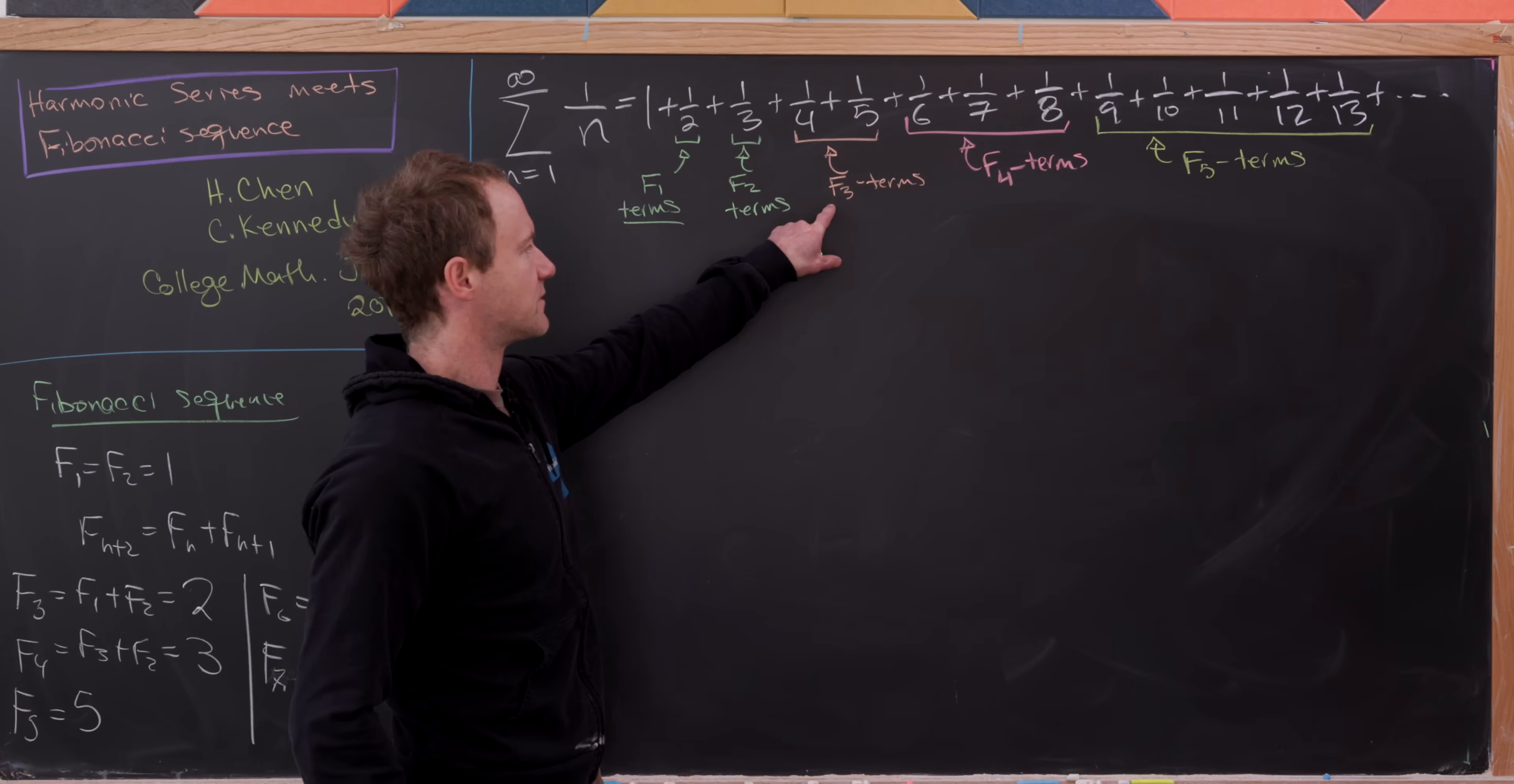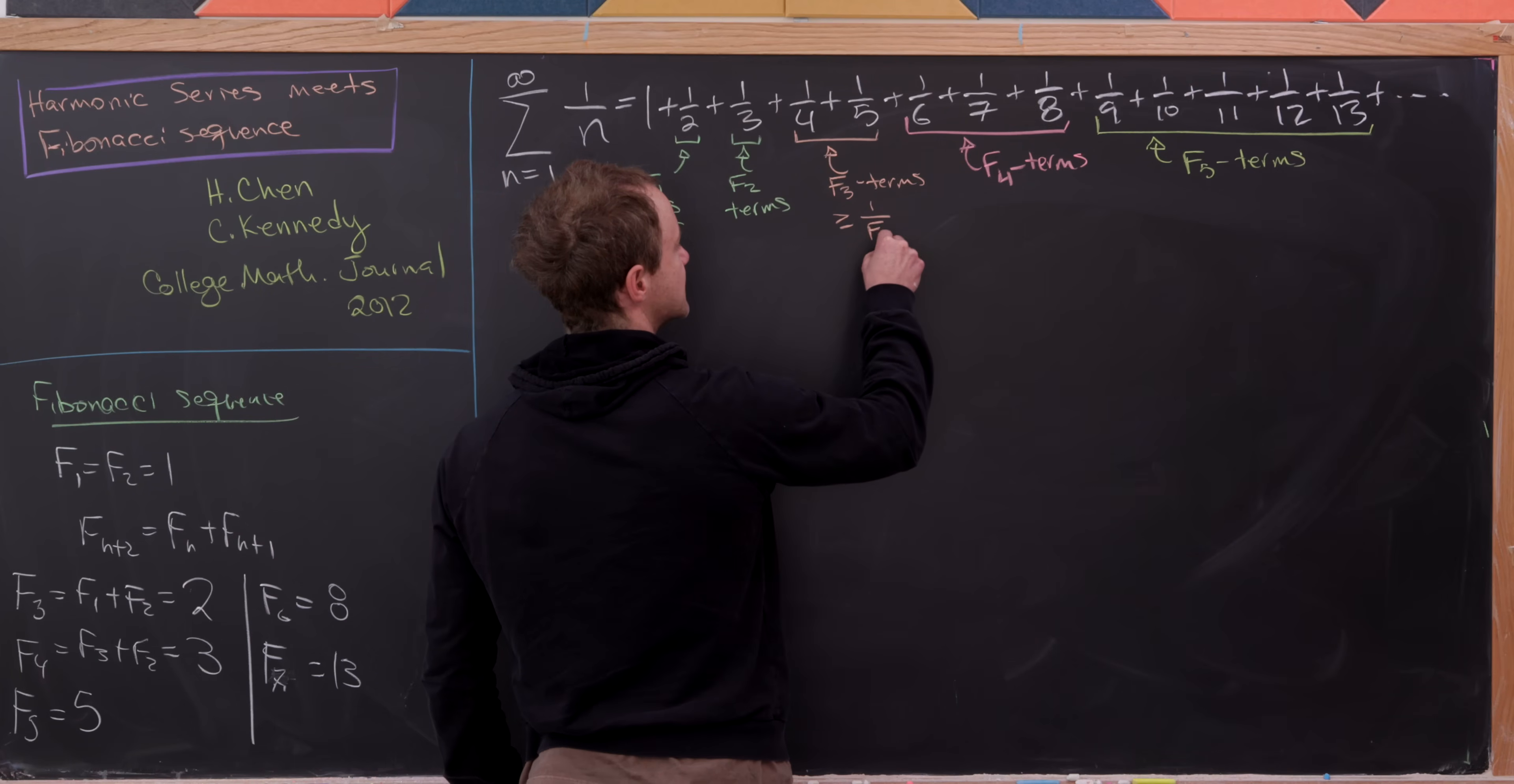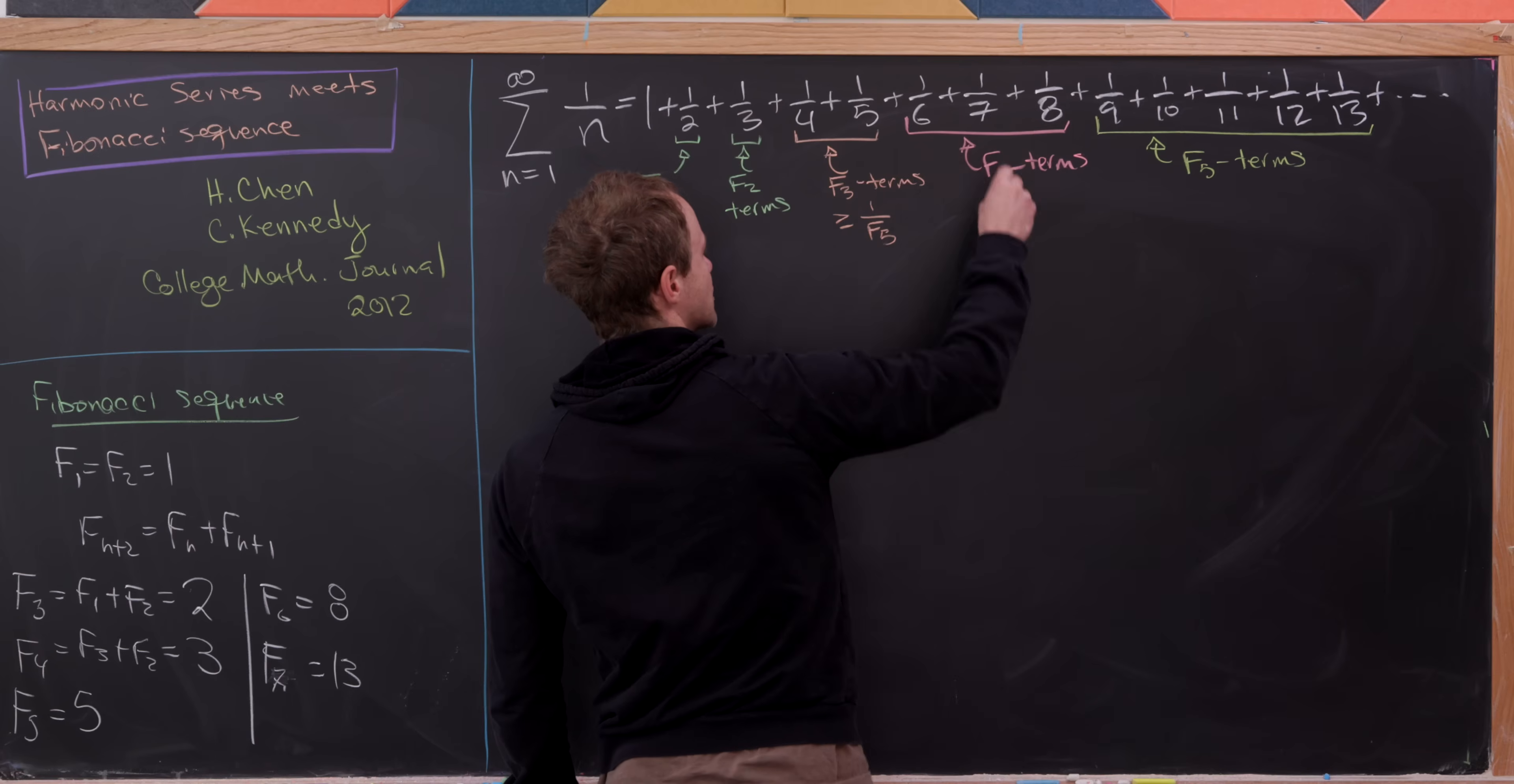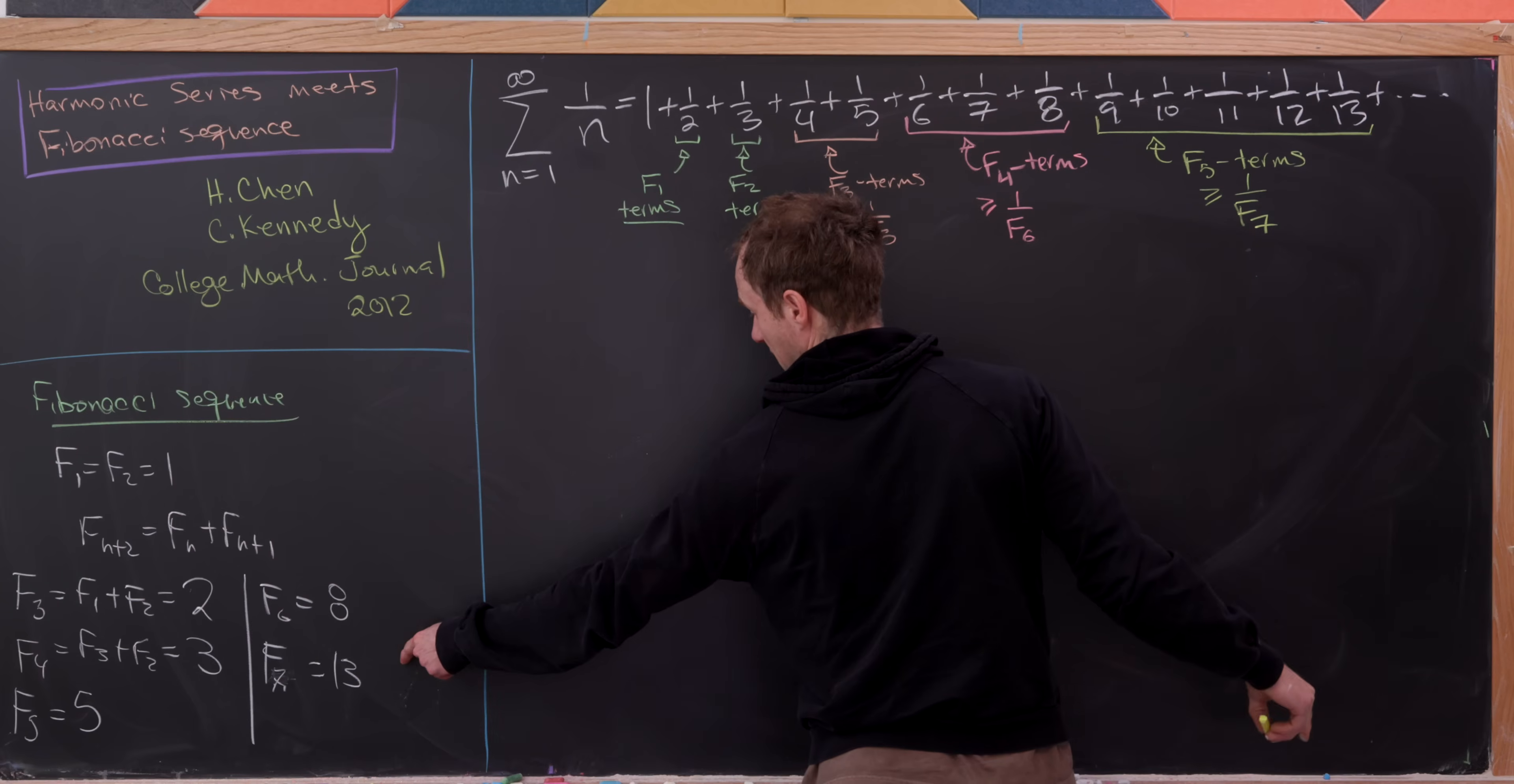Notice that all of the terms in this block that has length F sub 3 are bigger than 1/5. But 1/5, that's exactly the reciprocal of F5. So let's observe that each of these are bigger than or equal to 1 over F sub 5. So we have F sub 3 total terms, and they're all bigger than or equal to the reciprocal of F5. And then likewise for this next bit, notice that F6 is equal to 8. And all of our terms here are bigger than or equal to 1 over 8. Notice here we have 1 over 13. F7 is 13.